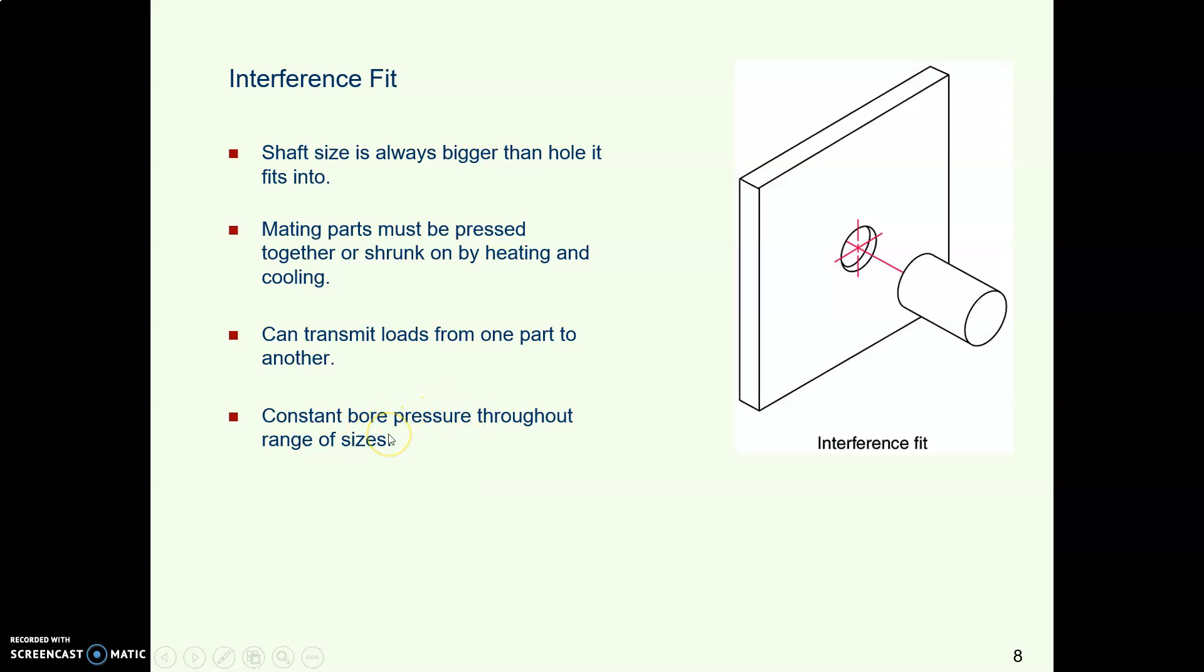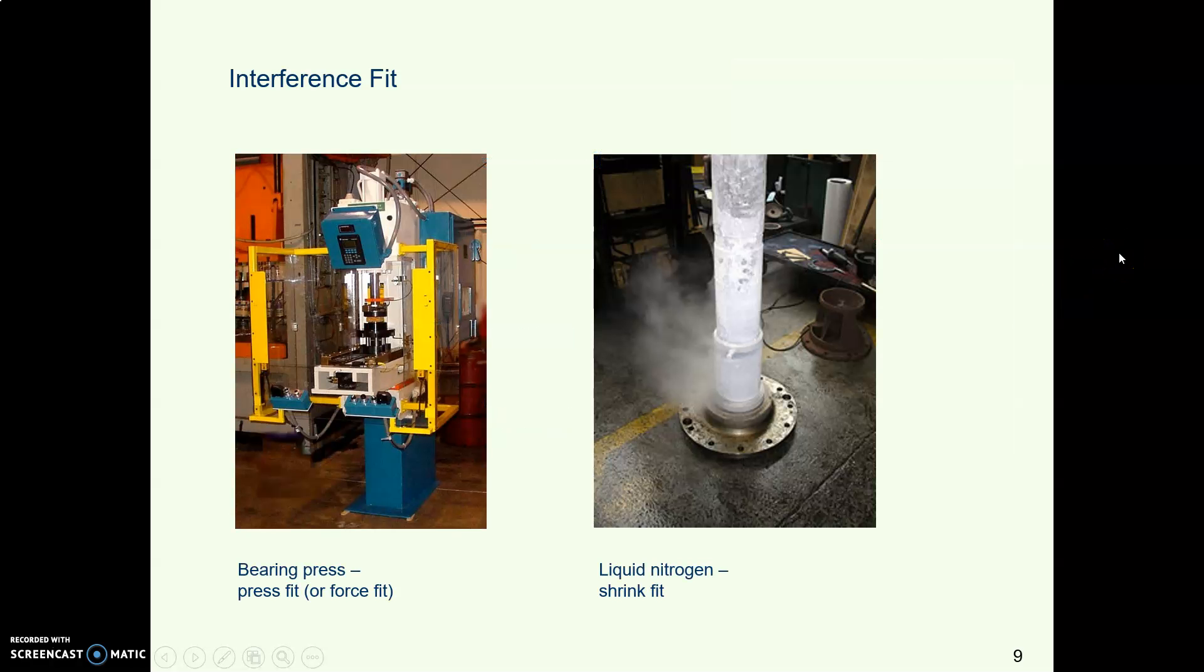You get uniform stress all the way around the shaft and the hole or whatever it is. Engineers have calculated these so that no matter what size of mating parts you have, you have a constant pressure in there. So with one class of interference fit, you might need a hydraulic press. Here's a bearing press pressing bearings into something.